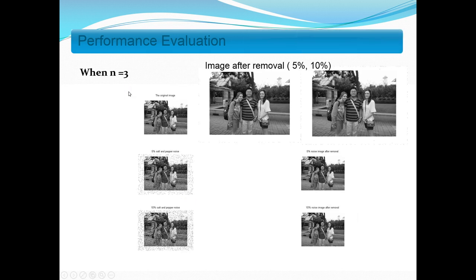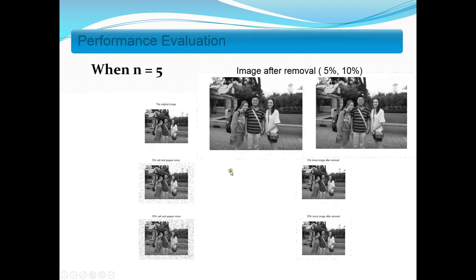Here is the performance evaluation. When the window size is 3, we have this output. To make it clearer, I made the picture bigger. This is the image after noise removal when the noise is 5%, and this is when the noise is 10%. We can find that with 10% noise, there are still some noises visible. When the window size is 5, the picture has less noise, but the quality also drops.